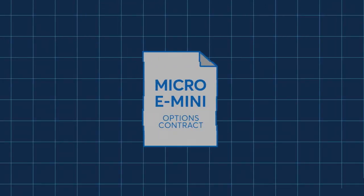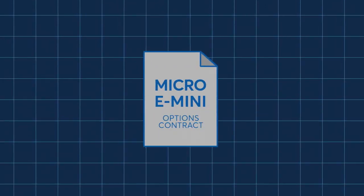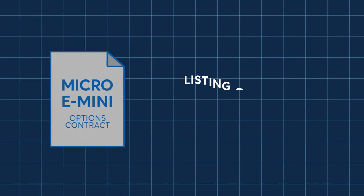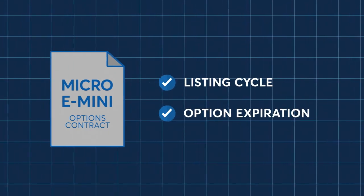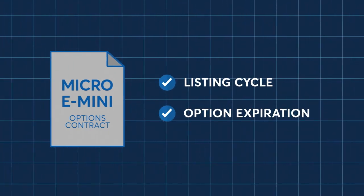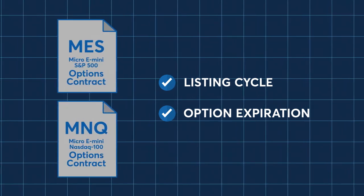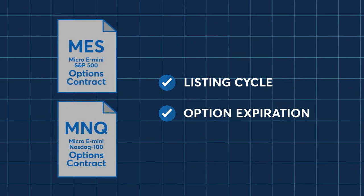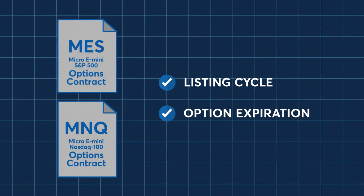As traders get ready to trade the new Micro E-Mini options, it is important to understand the listing cycle and the mechanics around options on futures expiration. Let's look at the listing cycle of options on Micro E-Mini S&P 500 and Micro E-Mini NASDAQ 100 futures contracts.